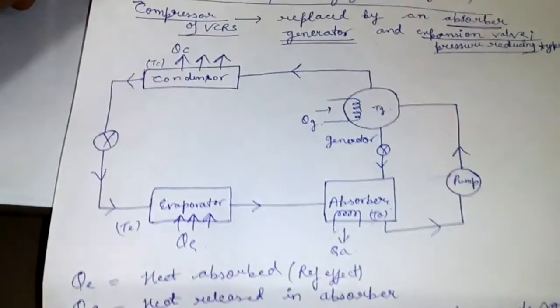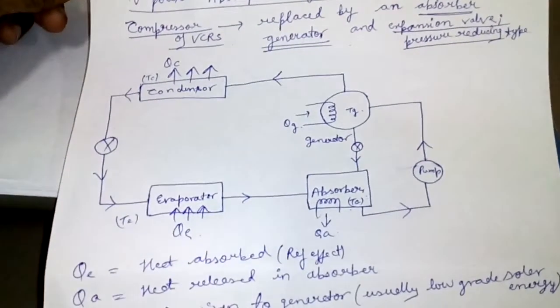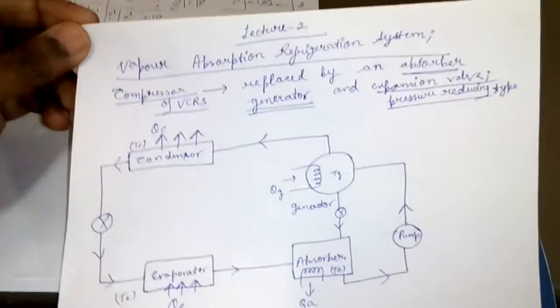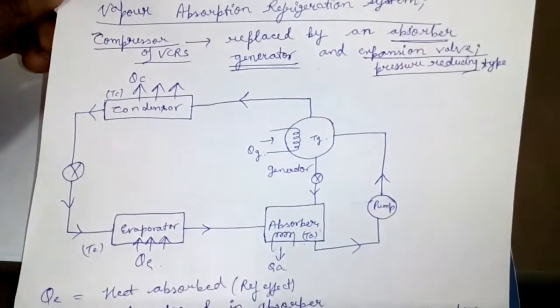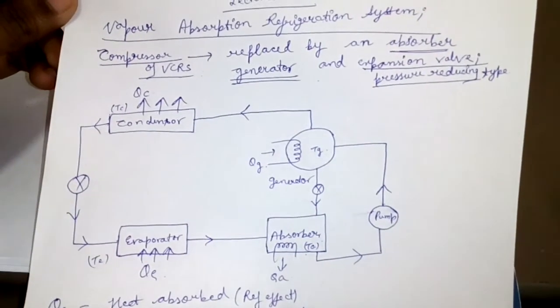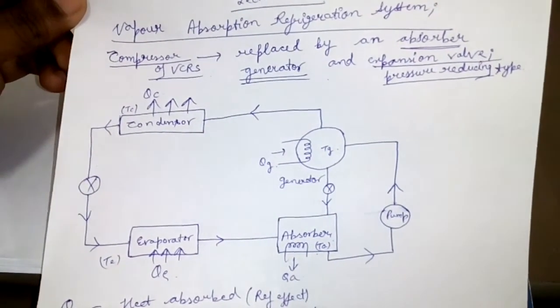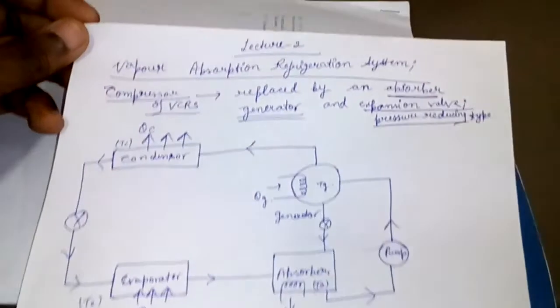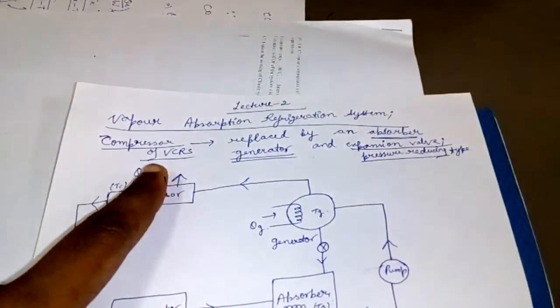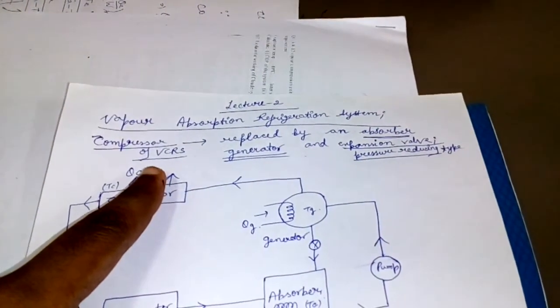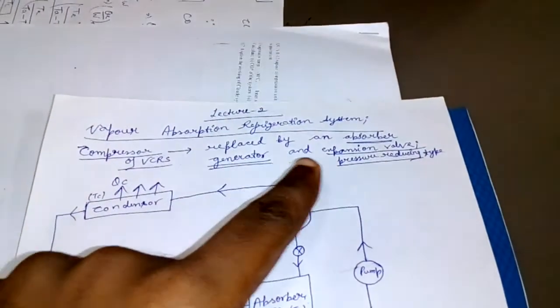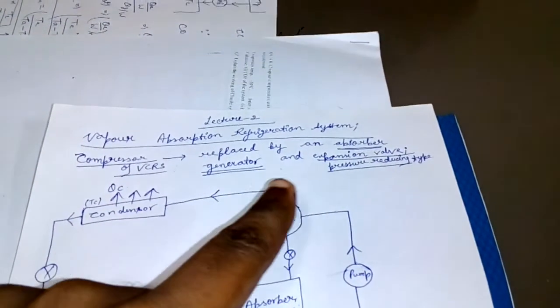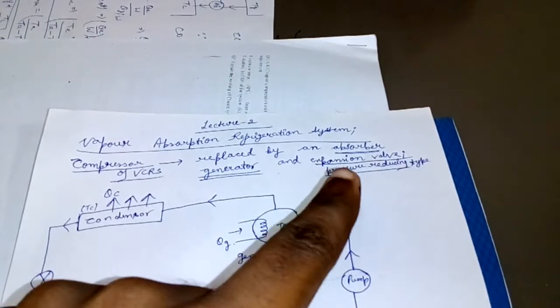So what is this Vapor Absorption Refrigeration System? It is basically a modification of Vapor Compression Refrigeration System in which the compressor is replaced by an absorber, generator, and a pressure reducing type expansion valve.